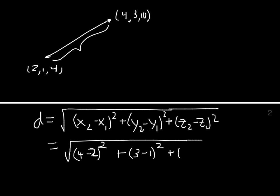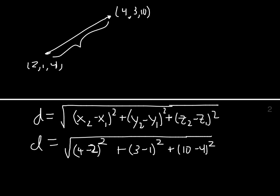Subtracting the z's: 10 minus 4. And so the distance between those points would be the diameter.